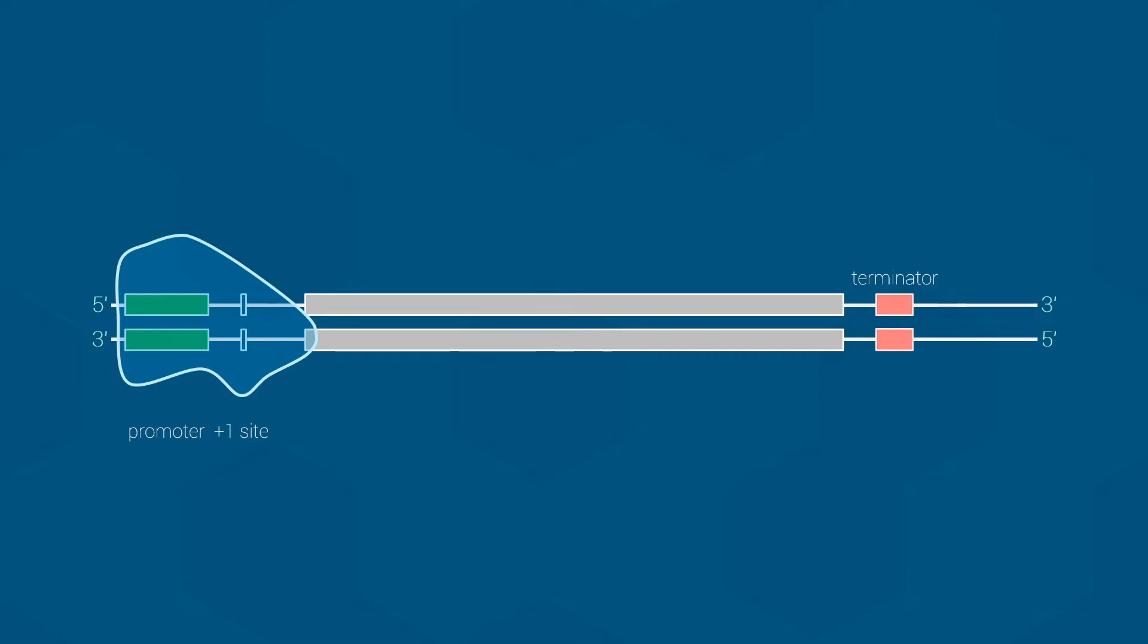But which strand should it use as the template? Well, like all polymerases, RNA polymerases read DNA from 3' to 5' and make a new complementary strand in a 5' to 3' direction.